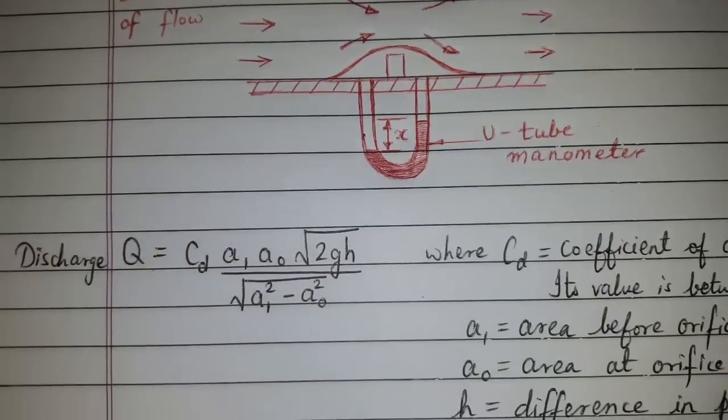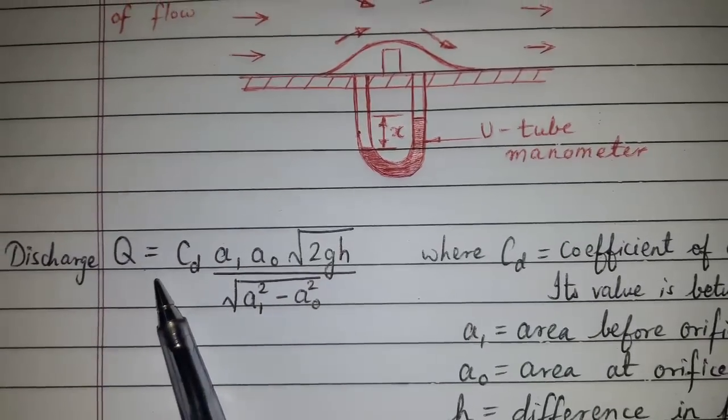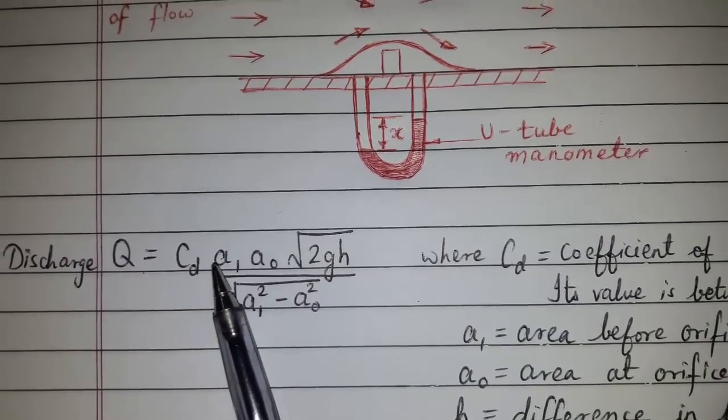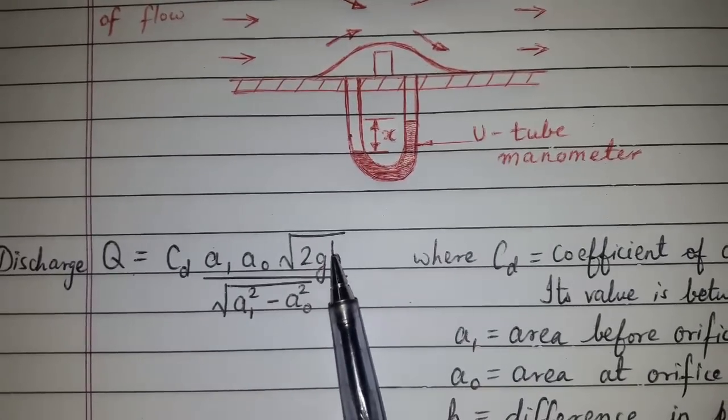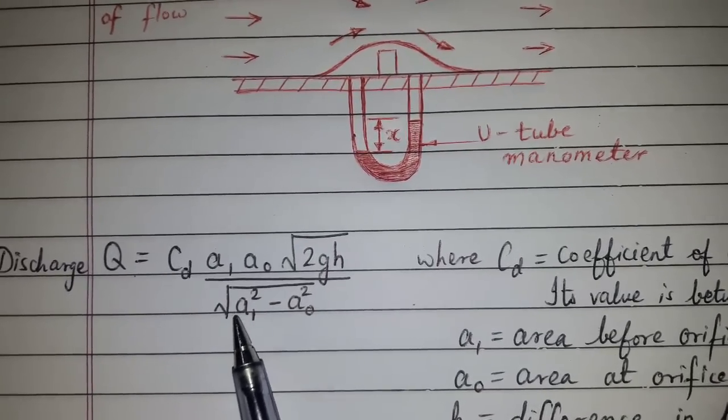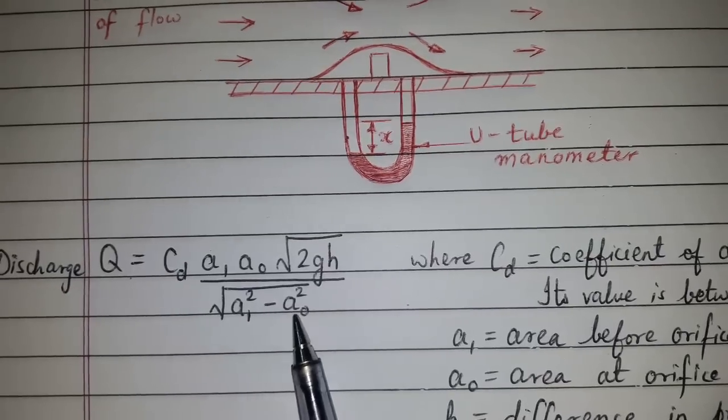Regarding the discharge Q, Q equals CD times A1 times A0 times root of 2GH divided by root of (A1 squared minus A0 squared).